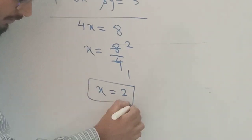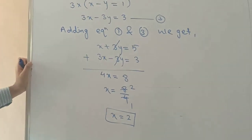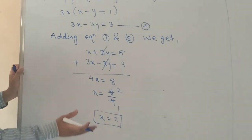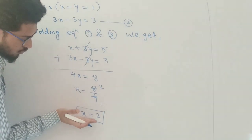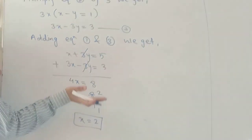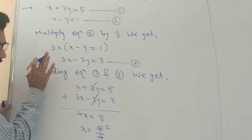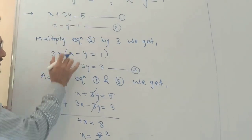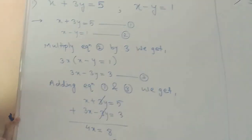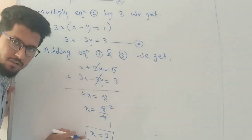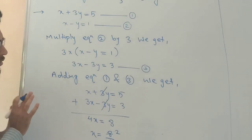This is the first answer — we have found x equals 2. Now we need to find the value of y. To do this, we substitute x equals 2 into either equation number 1, equation number 2, or equation number 3. You can substitute into any one of these three equations.